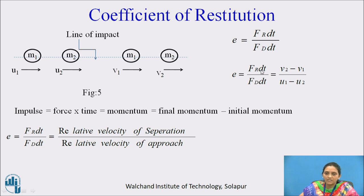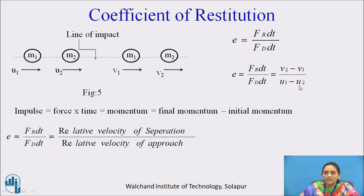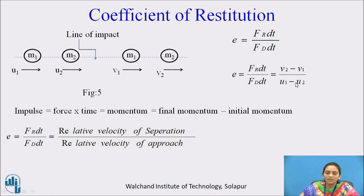Since impulse equals momentum change, and momentum is the product of mass and velocity, the impulse equals final momentum minus initial momentum. So the coefficient of restitution can be written as e = (V2 − V1) / (U1 − U2). Here, V2 − V1 is the relative velocity of separation (velocity after impact), and U1 − U2 is the relative velocity of approach (velocity before impact). So the coefficient of restitution equals relative velocity of separation divided by relative velocity of approach.